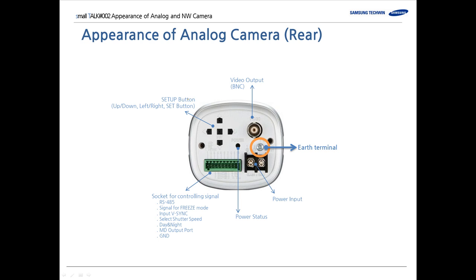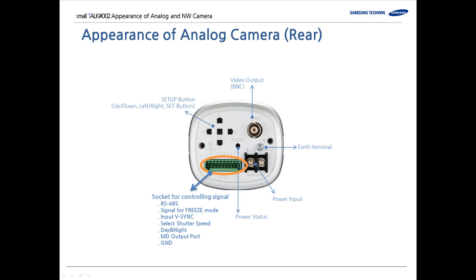This little screw is for lightning protective grounding. For the power supply, you need to put your power line here. This is a power LED to indicate whether power is being supplied. This socket is for controlling signals, including RS-485 and other functionalities.